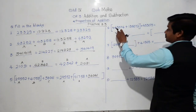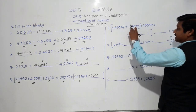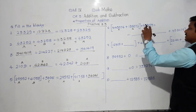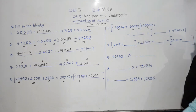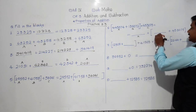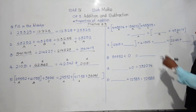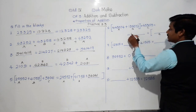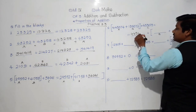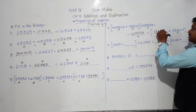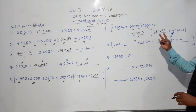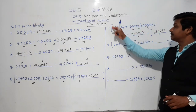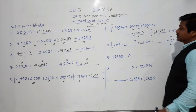Sixth example: (4,45,074 plus 1,36,072) plus 4,53,075 equals dash plus (dash plus 4,53,075). Here A is 4,45,074, B is 1,36,072, and C is 4,53,075. On the right, B and C are in the bracket and A is outside. So the two missing numbers are 4,45,074 and 1,36,072.